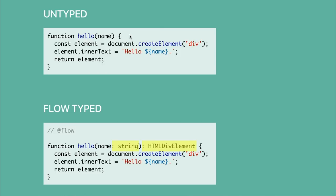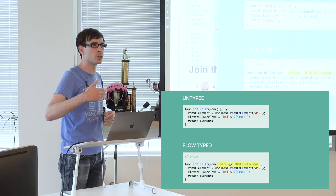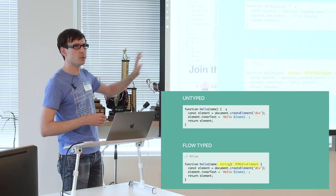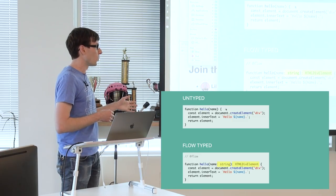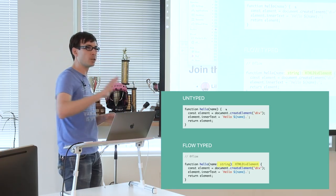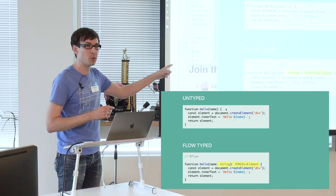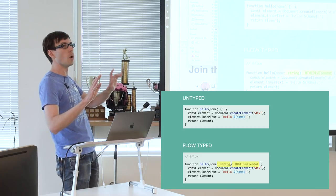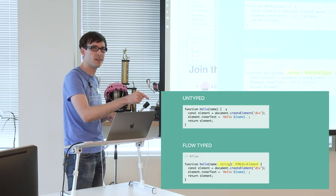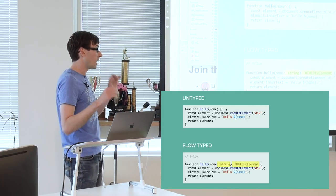It's got to be a string. And then when this function finishes running, it's got to return an HTML div. What the type checker does is it takes a look to make sure the function is internally consistent — are you using name the way you would use a string? And whatever you return, is it definitely an HTML div? But more importantly, a type checker is going to take a look at the whole rest of your program, particularly the people who call this hello function, and it's going to be like: when you called hello, did you pass it a string? And when you got the return value back, did you use it the way that a div should be used? And that's basically the whole thing.